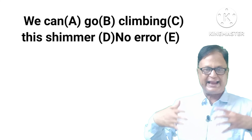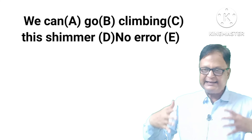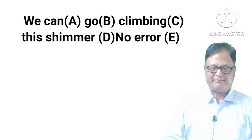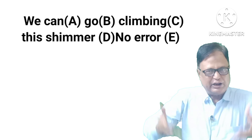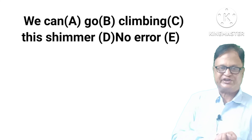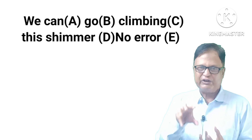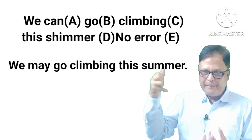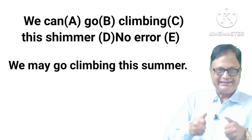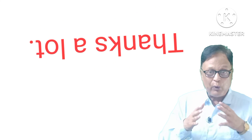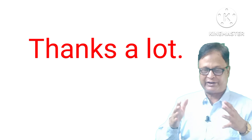Next: 'We can go climbing this summer.' We don't use 'can' to say there is a chance something will happen. Instead, we use 'may' or 'might.' The corrected sentence is: 'We may go climbing this summer.' This is the fourth series and it will continue — go through the channel to remember the words. Thanks a lot.